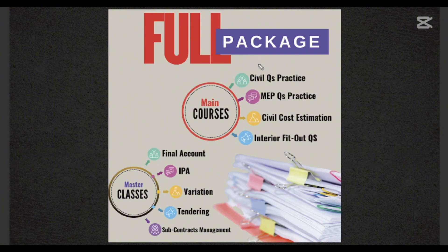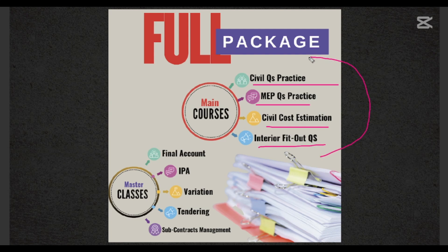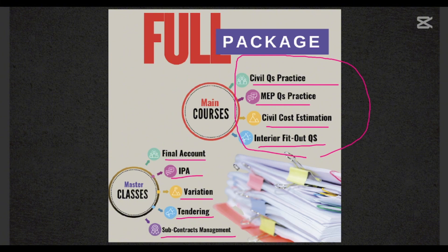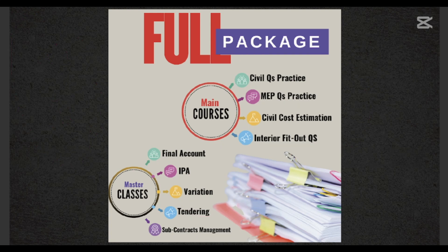This is a small introduction for our newly launched full package courses and master classes. We have launched four main courses: Civil QS, MEP QS, Civil Cost Estimation, and Interior Fit-Out. The master classes include Final Account, Interim Payment Application, Variation, Tendering, and Subcontractor Management — five master classes in total. Overall, we have a full package of quantity surveying courses available. Check the links to our class coordinator for more information.